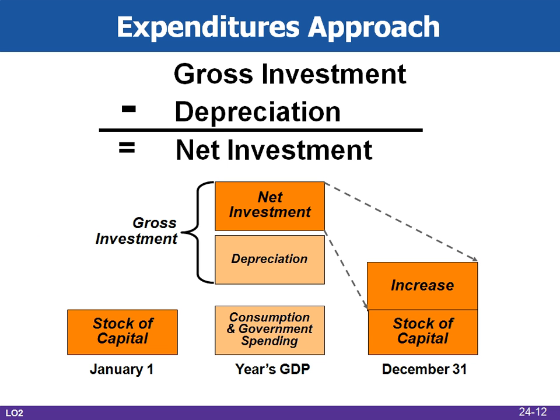If more new structures and capital equipment are produced in a year than are used up, net investment is positive and the productive capacity of the economy will expand, as shown in Figure 24.2. When gross investment and depreciation are equal, a nation's productive capacity is static. When gross investment is less than depreciation, net investment is negative and an economy's productive capacity declines.